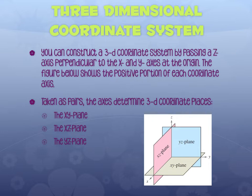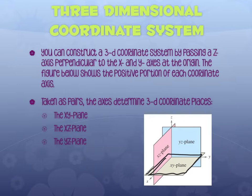Taken as pairs, the axes determine three coordinate planes. The xy-plane is the plane formed where the x and y lines intersect. The yz-plane contains both y and z, and the xz-plane contains both x and z. Don't stress about drawing this out — I'll teach you how to plot the points, and then we're going to talk about how to find midpoint and distance.